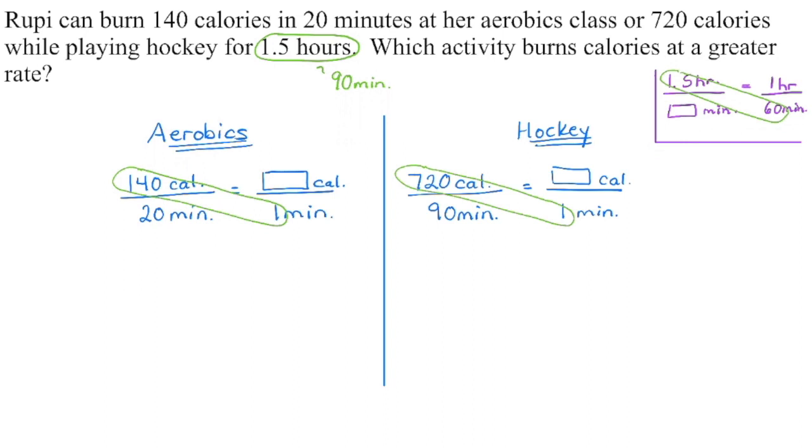Now, if we're trying to find a unit rate, you might notice that every time we're just dividing. Because 140 times 1 is going to be 140, and then we're dividing by 20. The same thing over here.